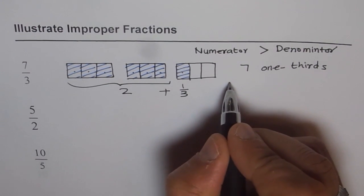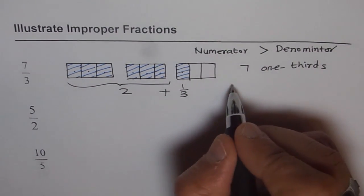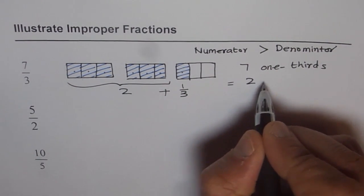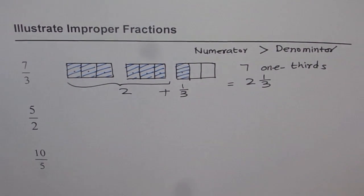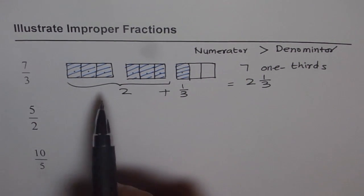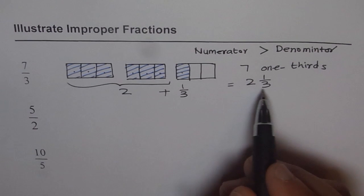So I can write this as 7 over 3 or 7 one-thirds as equal to 2 whole and 1 one-third. So that is how I can write improper fraction 7 over 3 or 7 thirds as a mixed fraction.